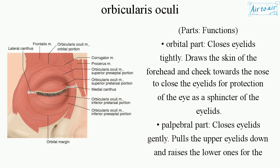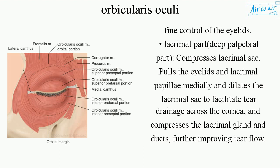Parts and Functions. Orbital part: closes eyelids tightly, draws the skin of the forehead and cheek towards the nose to close the eyelids for protection of the eye, acting as a sphincter of the eyelids. Palpebral part: closes eyelids gently, pulls the upper eyelids down and raises the lower ones for fine control of the eyelids.